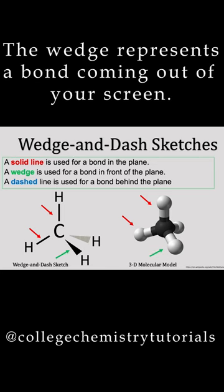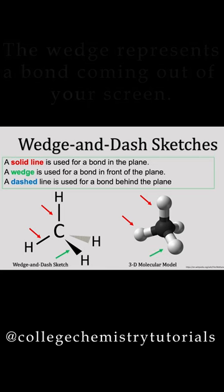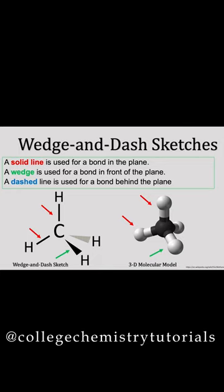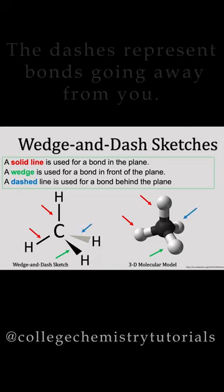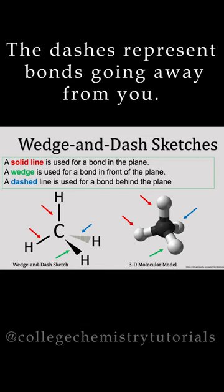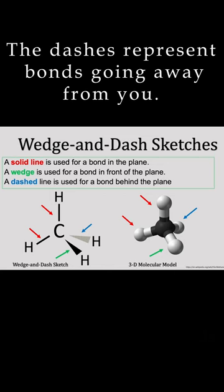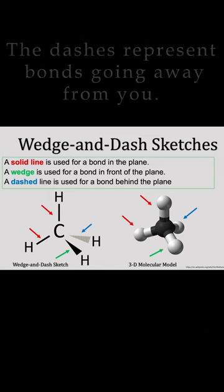The wedge represents a bond coming out of your screen and in your direction. Finally, the dashes represent bonds going away from you or into your screen.